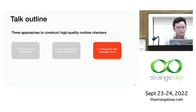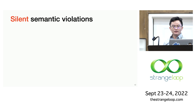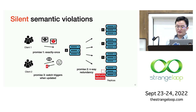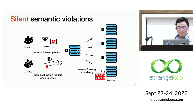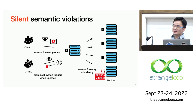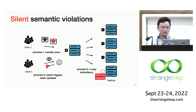Distributed systems today provide many semantics, such as exactly-once message delivery, created data should be persisted in redundant copies, and whenever some object is updated some workers should be invoked. But bugs in those distributed systems can break those semantics without causing any explicit error signals. For example, you may have some messages get delivered twice, or some data may not get replicated to enough copies, and when some object is updated the system may fail to notify the client. Such silent violations can cause severe consequences, but they are extremely difficult to detect because of lack of any error signals.